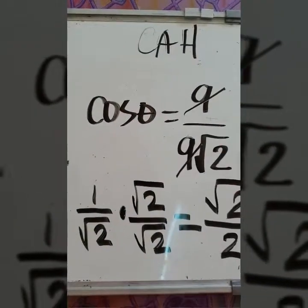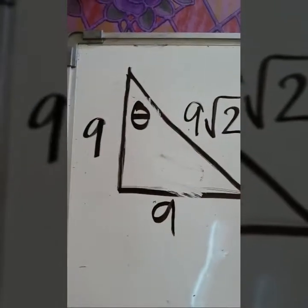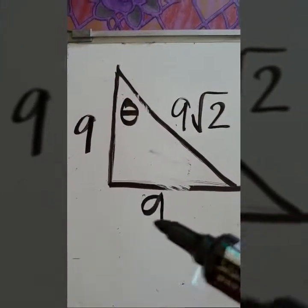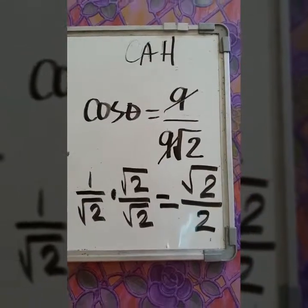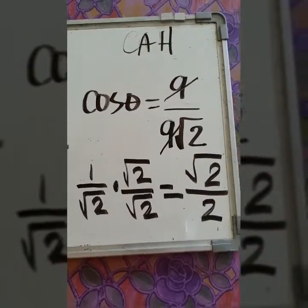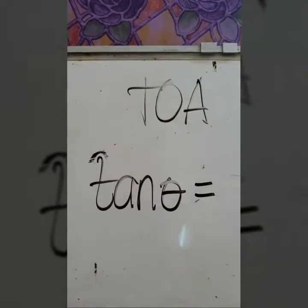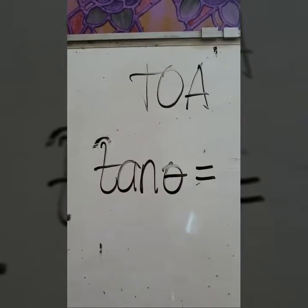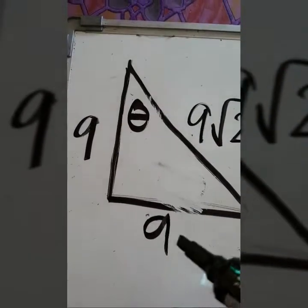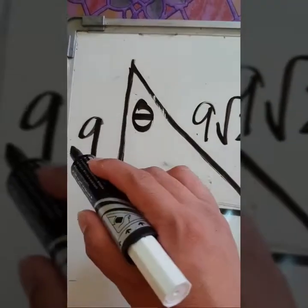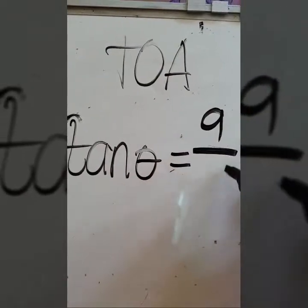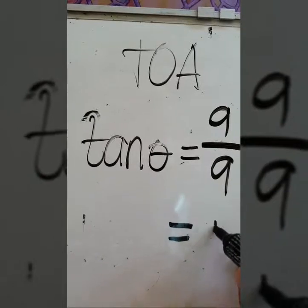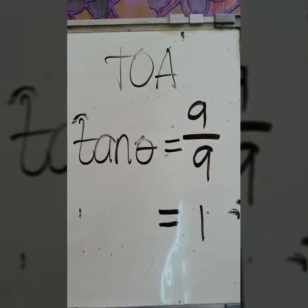Let's solve for cosine theta. Since the adjacent side is also 9 and the hypotenuse is 9 square root of 2, cosine theta also equals 9 over 9 square root of 2. Following the same process, cosine theta equals square root of 2 over 2. Then, tangent theta equals opposite over adjacent. The opposite side is 9 and the adjacent side is also 9. So tangent theta equals 9 over 9, which equals 1. Therefore, tangent theta is equal to 1.